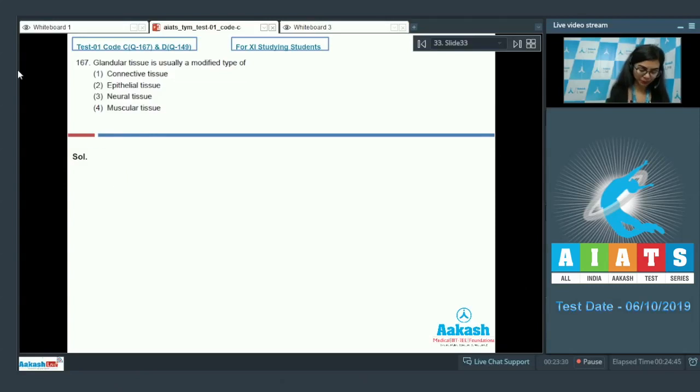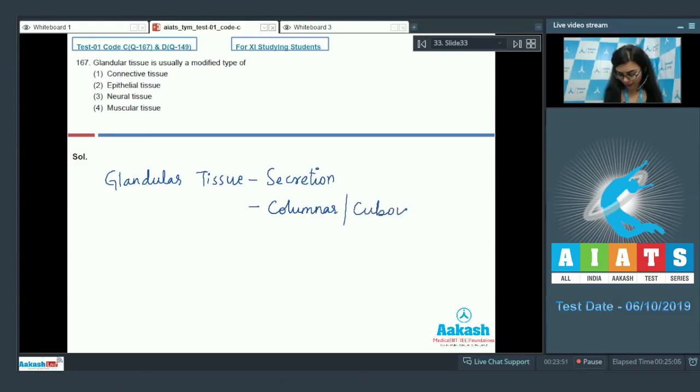Question 167: Glandular tissue is usually a modified type of connective tissue, epithelial tissue, neural tissue, or muscular tissue. Students, glandular tissues are specialized for secretion. Some of the columnar or cuboidal cells get specialized for secretion, so they are columnar or cuboidal cells.